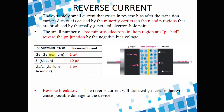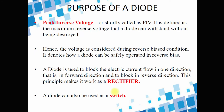The reverse current for certain semiconductors: for germanium, 1 microampere; for silicon, 10 picoampere; for gallium arsenide, 1 picoampere — a very small amount of current. Reverse breakdown is when the reverse current will drastically increase, causing possible damage to the device if the reverse bias voltage is increased beyond a certain point. Peak inverse voltage, or PIV, is defined as the maximum reverse voltage that a diode can withstand without being destroyed. If the reverse voltage exceeds the PIV, the diode can be destroyed.